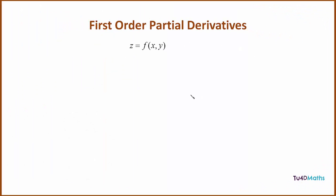In the first video on partial differentiation we saw that if we had some function z made up of two variables x and y, we could differentiate the function with respect to the first variable by keeping the second variable constant, or we could differentiate the function with respect to the second variable by keeping the first variable constant.